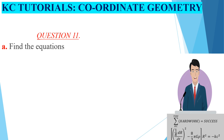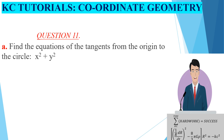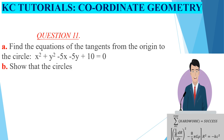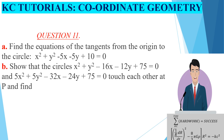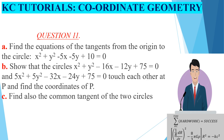The question goes: find the equations of the tangents from the origin to the circle x² + y² − 5x − 5y + 10 = 0. Part B says show that the circles x² + y² − 16x − 12y + 75 = 0 and 5x² + 5y² − 32x − 24y + 75 = 0 touch each other at P, and find the coordinates of P. Part C says find also the common tangent of the two circles passing through P.